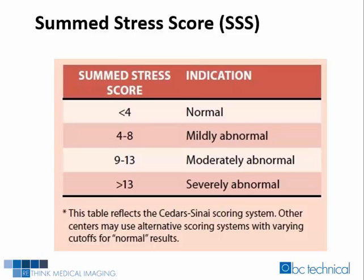A summed stress score less than 4 indicates a normal area of perfusion. A summed stress score that equals 4 through 8 indicates a mildly abnormal area of perfusion. A summed stress score that equals 9 through 13 indicates a moderately abnormal area of perfusion. And a summed stress score greater than 13 indicates a severely abnormal area of perfusion.